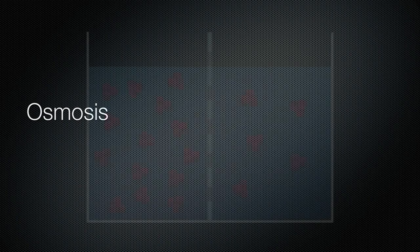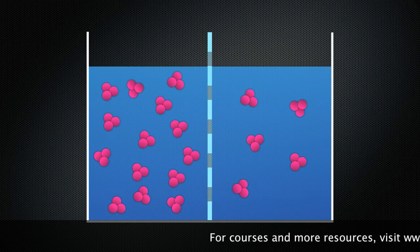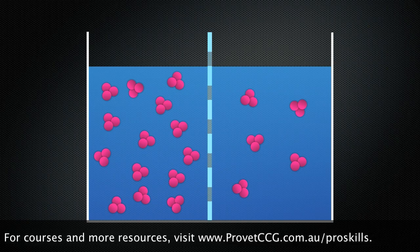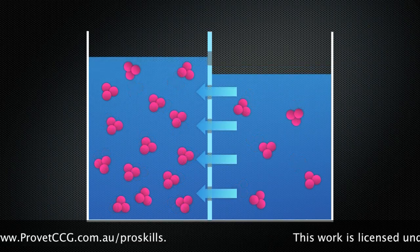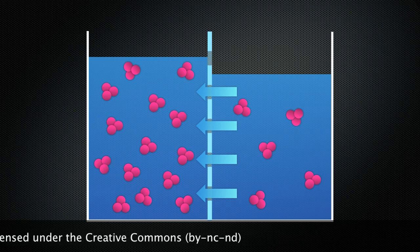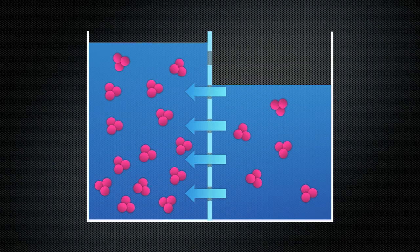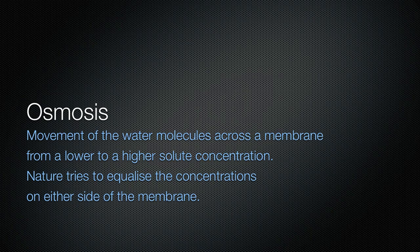The next concept is osmosis. Let me illustrate what it is. Consider two compartments divided by a semi-permeable membrane where one compartment has a greater osmolarity — that's the one on the left in this diagram — than the other compartment on the right. Remember, nature aims to even out the concentrations. The large particles can't cross the membrane, but water can. Water moves across the membrane from the compartment with the lower concentration to the one with the higher concentration. This increases the concentration on the right and decreases it on the left, evening out the differences. So we can define osmosis as the movement of water molecules across a semi-permeable membrane from a lower to a higher solute concentration.